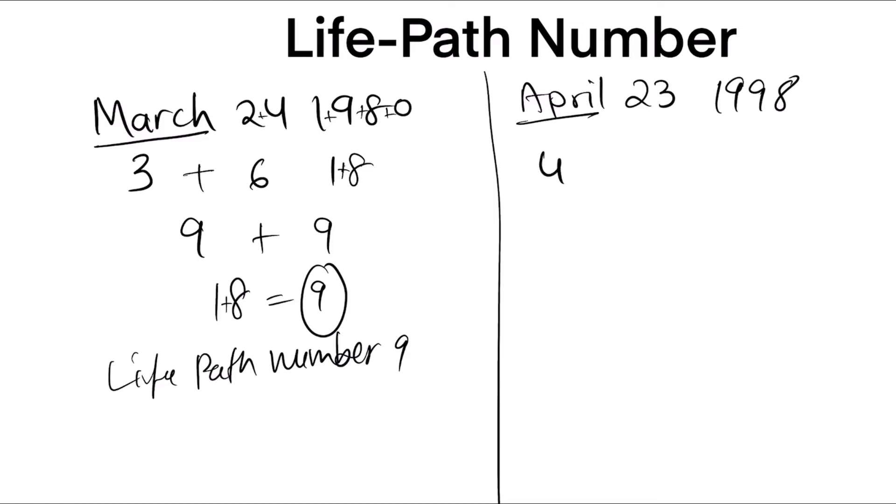April is 4. 23rd, so 2 plus 3 is 5. Then 1 plus 9 plus 9 plus 8.